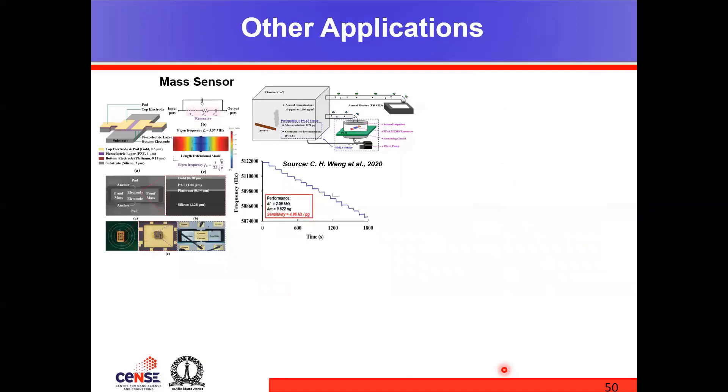Let us briefly go over the other applications, starting with a mass sensor. This is basically a TPOS MEMS oscillator based mass sensor where we use PZT as a piezoelectric material. The resonator is designed to operate at length extension mode with a resonant frequency of 5.12 megahertz. The mass resolution of this particular setup is about 0.54 picogram with a sensitivity of 4.96 hertz per picogram, as you see over here.